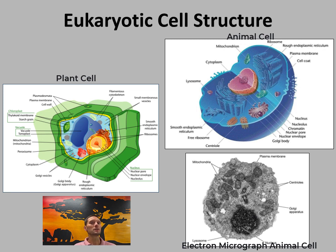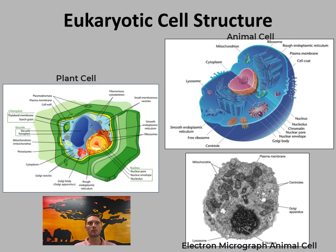Eukaryotes include plants, animals, and fungi. The ribosomes of eukaryotes are 80S, so they are a little different in size and shape than what we see in prokaryotes.